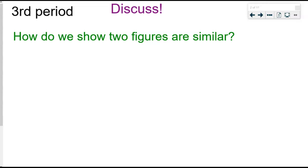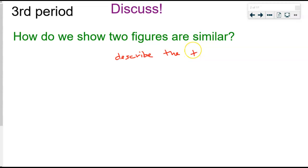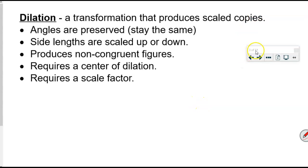We use the definition of similarity, which means we're going to show that they line up by describing the sequence of rigid transformations and dilations that get them to line up. You don't just say they're the same or that the angles are the same — you have to actually describe the transformations. If they're similar, those transformations would include a dilation, among others: possibly rotations, reflections, and translations. Remember, dilations keep the angles the same; we need a center of dilation and a scale factor.